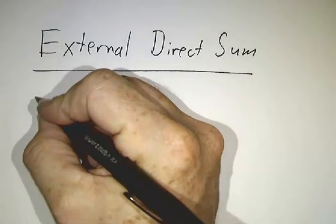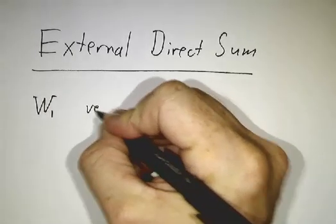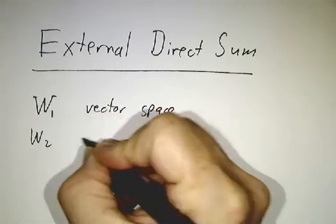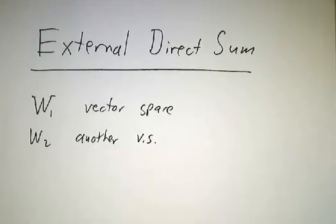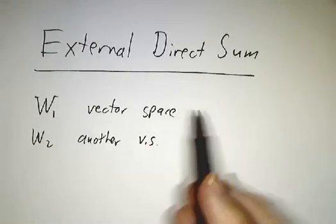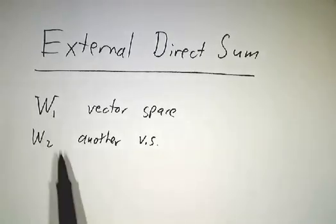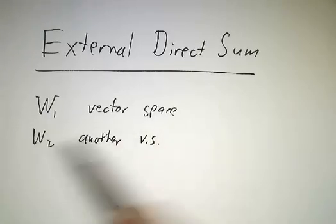Let's suppose that W₁ is a vector space, and W₂ is another vector space. They can have nothing to do with each other. Maybe W₁ is the space of all 3x3 matrices, and W₂ is the space of all 5th order polynomials. They can be absolutely anything.